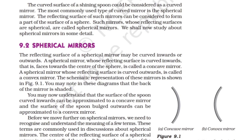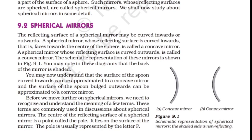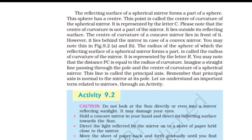The center of the reflecting surface of a spherical mirror is a point called the pole. It lies on the surface of the mirror and is usually represented by the letter P. The reflecting surface of a spherical mirror forms a part of a sphere, which has a center called the center of curvature, represented by the letter C. Please note that the center of curvature is not a part of the mirror — it lies outside its reflecting surface. The center of curvature of a concave mirror lies in front of it, whereas it lies behind the mirror in the case of a convex mirror, as shown in figure 9.2A and B.